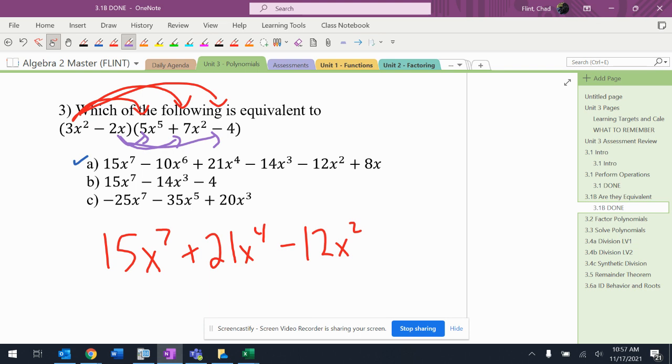Negative 2x times 5x to the fifth is negative 10x to the sixth. Negative 2x times 7x squared is negative 14x to the third. Negative 2x times negative 4 is plus 8x.